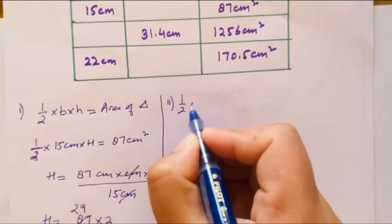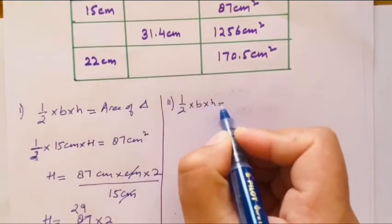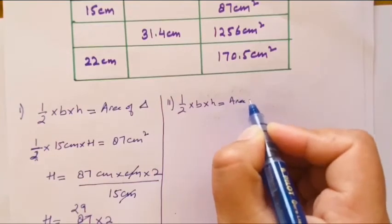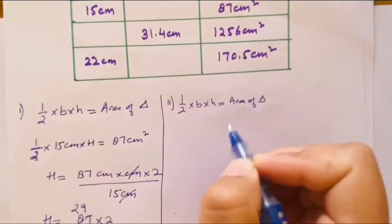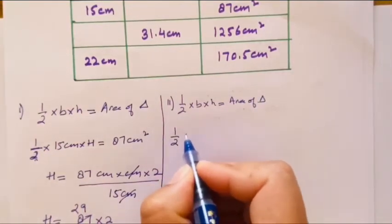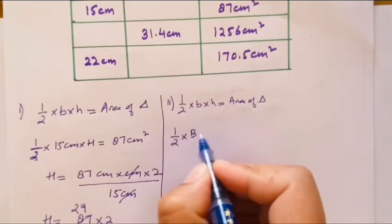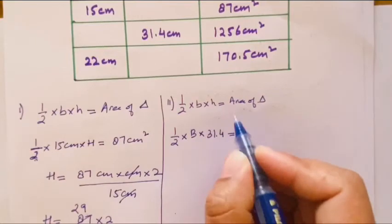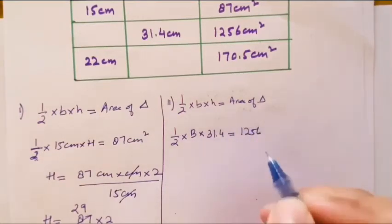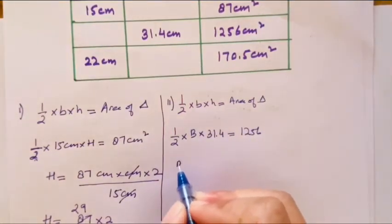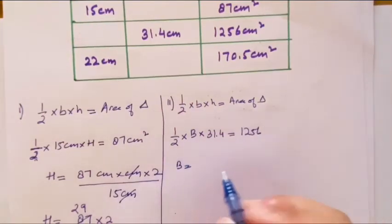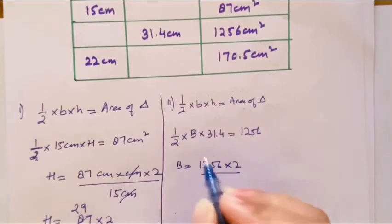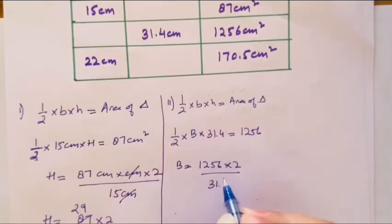In second part, half into base into height equals to area of triangle. So half is there, base you have to find, height given is 31.4, equals to area given is 1256. So base to find, 2 divided is multiply, 1256 into 2 upon 31.4.